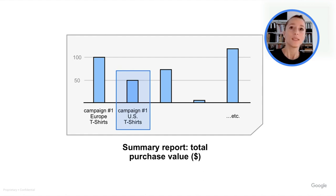Let's assume that this bucket represents the total purchase value for campaign one, geography US, United States, and product category t-shirts. And let's say that for this campaign, the total purchase value for t-shirts was about $50. Now, this is the summary value.